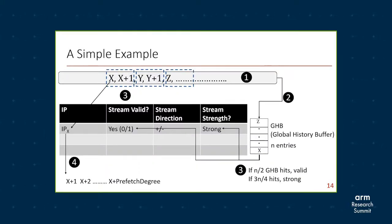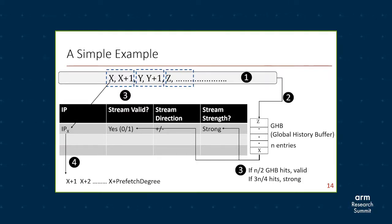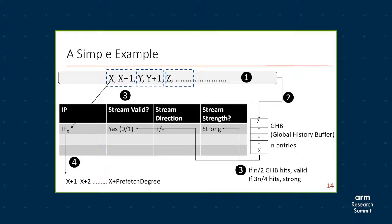To understand the global stream class better, let's take an example. In step one, we see accesses to cache lines X, X plus one, Y, Y plus one, and Z, where the first access is driven by IP-X. In step two, we store all these accesses into a buffer called the global history buffer. If we find there are more than N/2 entries in the global history buffer for that particular region, we make this IP a global stream. If more than three-fourths of GHB entries are getting hit, we call it a strong global stream. In future, if IP-X comes, it looks at the direction of the stream and, knowing the stream is strong, just prefetches all consecutive cache lines in that region.